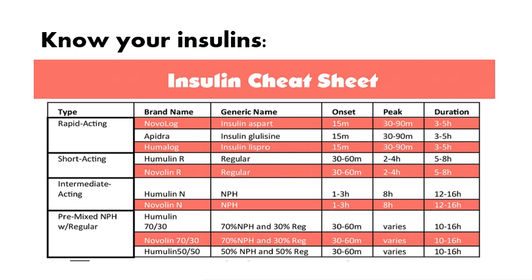Go back to your pharmacology or fundamentals books and look up the insulin names. You should recognize that Novolog or Humalog are rapid acting; Lispro or Regular are short acting; NPH, Humulin N, or Novolin are intermediate acting; Humulin 70/30 or 70% NPH with 30% regular is a pre-mixed insulin. There are also long-acting insulins. Make sure you know the different names.